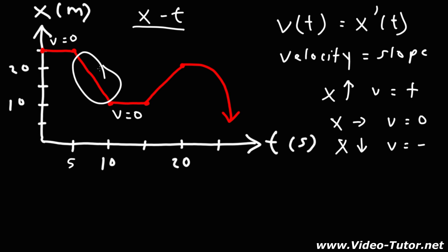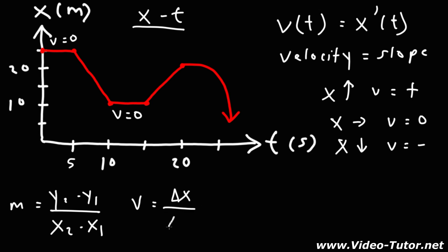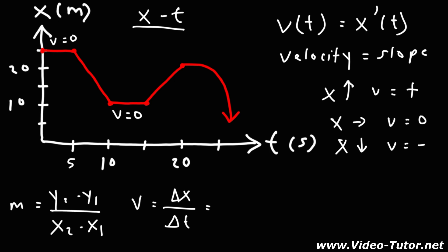What is the velocity during t equals 5 and t equals 10? We can calculate the slope between these two points using the rise over run formula. The slope is the change in y divided by the change in x. Likewise, the velocity is going to be the change in position over the change in time, since the position function is on the y-axis. So it's x final minus x initial divided by t final minus t initial.